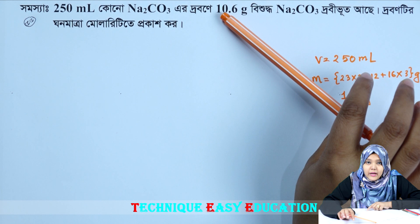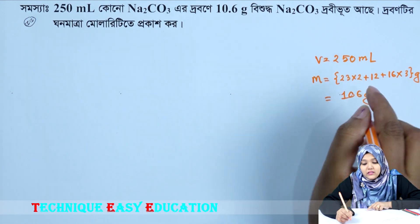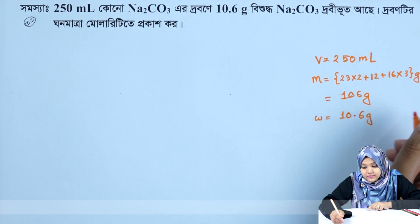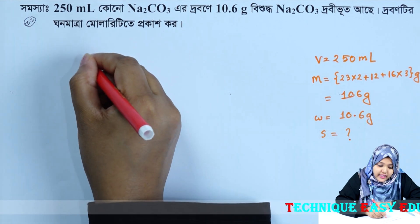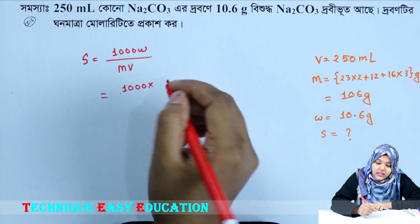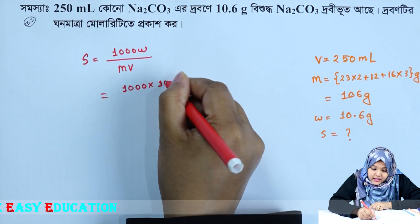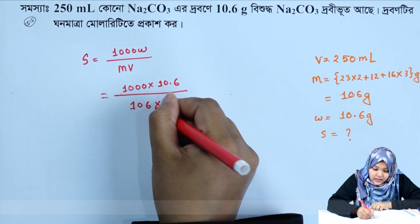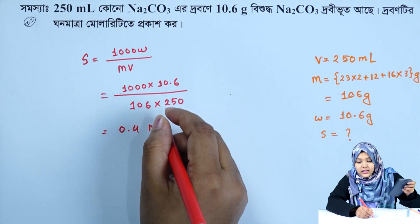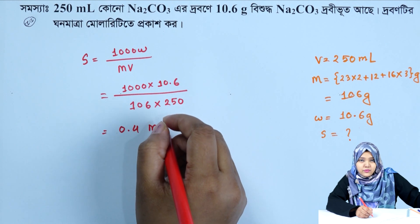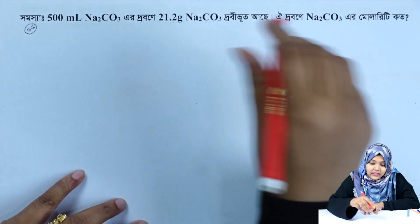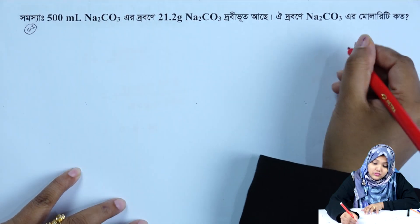Sodium carbonate is equal to 106 grams. S is equal to y. So we have to use the formula: molarity is equal to 1000 w divided by m times v. So w is equal to 10.6, m is equal to 106, and v is equal to 250. The molarity comes out to 0.4 molar.